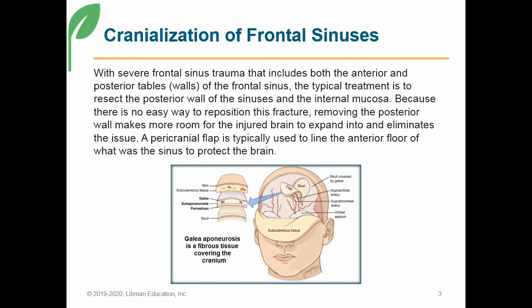Another type of trauma that can cause a coding challenge is trauma to the forehead and the frontal sinuses. When there is severe sinus trauma to both the anterior and posterior tables — basically the front and back wall of the frontal sinus — the typical treatment is to resect the posterior wall of the sinus and the internal mucosa. Because there is no easy way to reposition this fracture, removing the posterior wall makes extra room for the injured brain to expand and eliminates this issue.